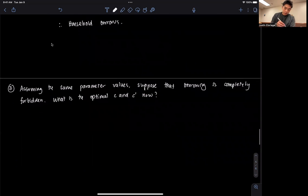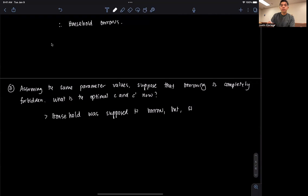that is, the household was supposed to borrow. But since it's forbidden, we'll just choose C star equals Y equals 7, and C prime star equals Y prime equals 11. So the best thing that the household can do is just consume what they were given with, because optimally we found out that they're gonna borrow, and if we shut down borrowing, then the best alternative is to just consume what they were endowed with in each period, because saving would reduce their utility further.